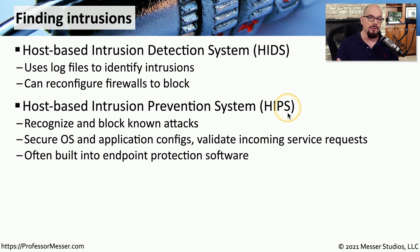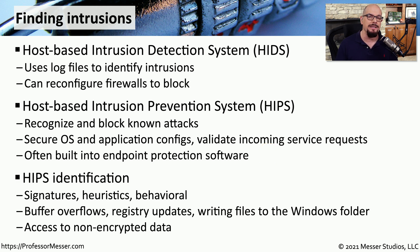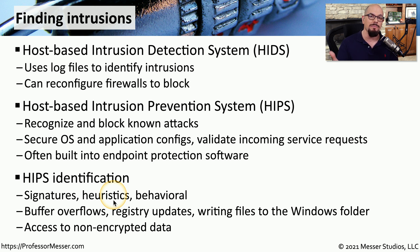You may find that the HIPS functionality is built into the endpoint protection software used for antivirus or anti-malware rather than running as a separate piece of software. Host-based intrusion prevention systems use many different techniques to identify attacks — signatures for known vulnerabilities, heuristic functionality to identify when large changes are occurring, and behavioral identification so that if a certain behavior occurs, even without a signature or major change triggering heuristics, something occurring out of the ordinary can still be detected.